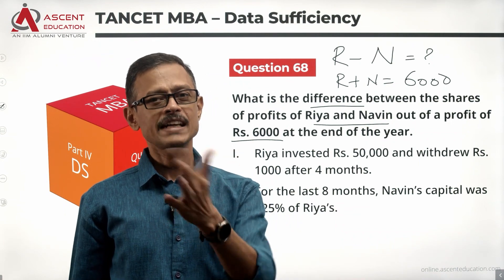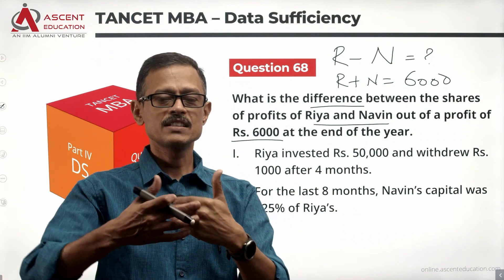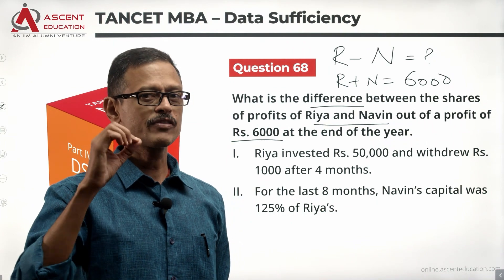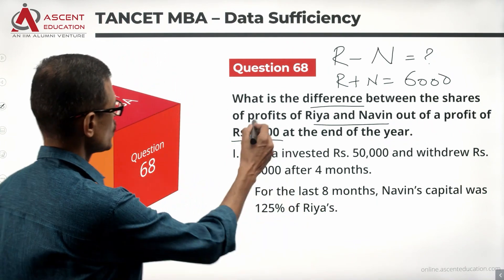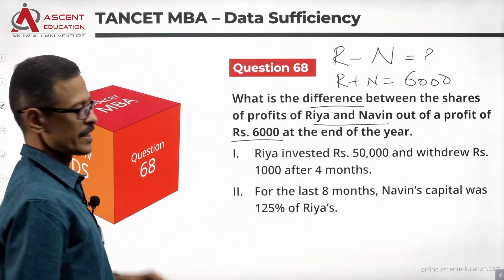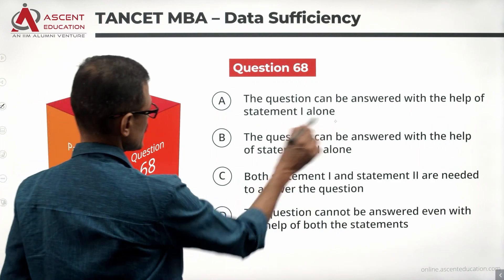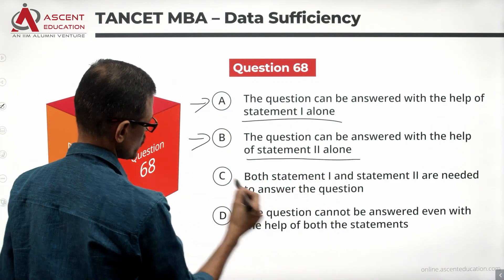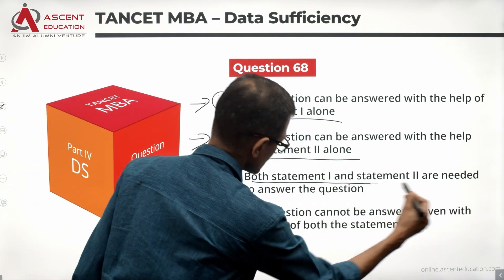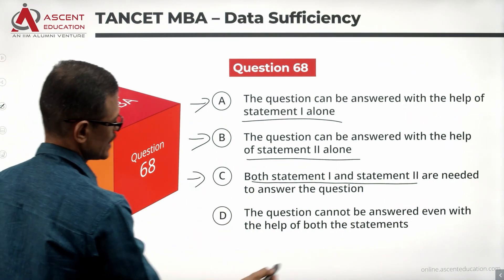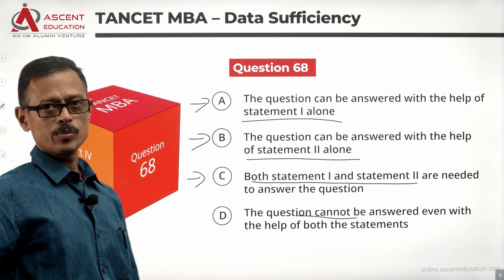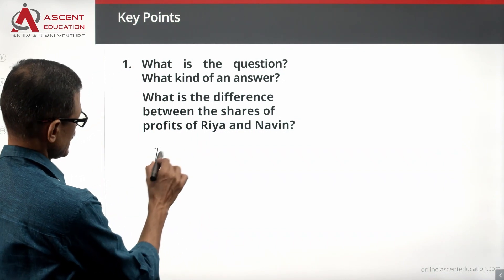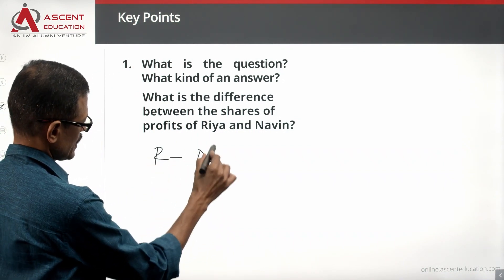Rhea minus Navi might be minus 1,000, which means Navi has more money. We will have to essentially come up with the difference in the profits earned by them when the overall profit is 6,000. Statement 1 alone is sufficient — answer option A. Statement 2 alone is sufficient — answer option B. Both statements together are sufficient — answer option C. It cannot be answered — answer option D. The question is R minus N, and we will have to be able to determine it.